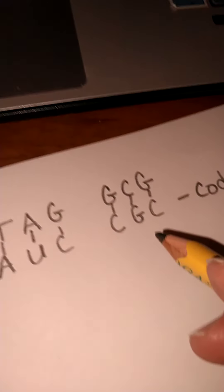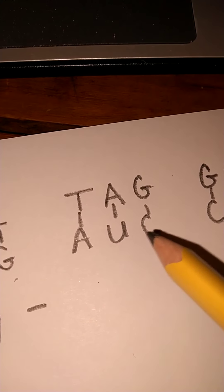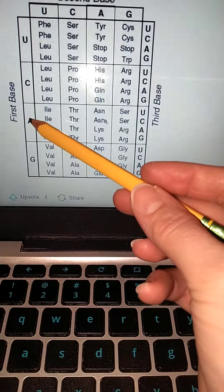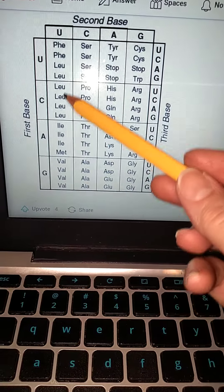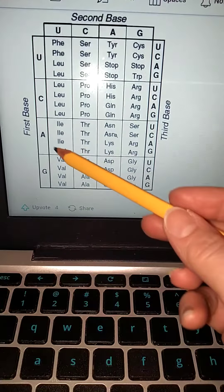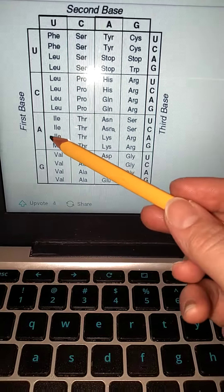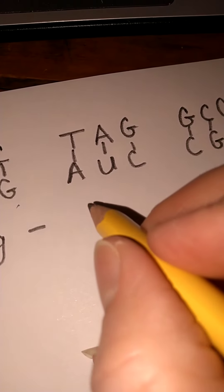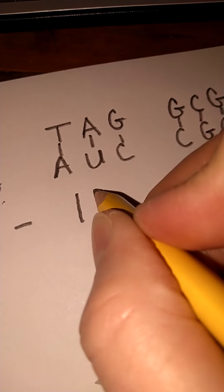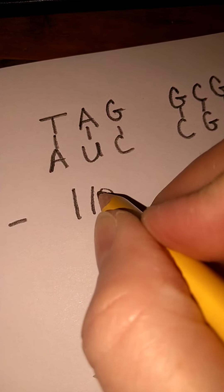Our next one's coded for A, U, C is our next codon on our mRNA. So A, U, C, and so I go to A, and then U is right here, so it's going to be in this box right here, and then C is right here, the second one. So it's isoleucine, I, L, E, will be our next amino acid. So I, L, E, isoleucine.